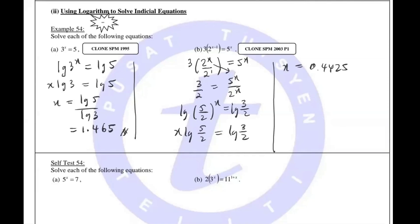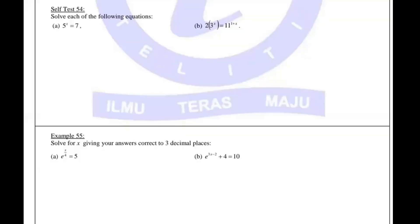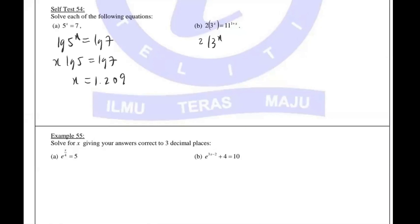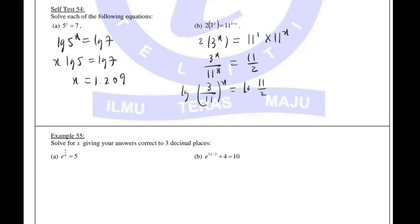For 7^x = 5, just introduce log on both sides and bring the power down: x equals lg7 divided by lg5, giving approximately 1.209. For the next one, don't introduce log first — break up the 11^(x+1) to 11^1 times 11^x, bring the 11 over and the 2 over the other side, factorize x, then introduce log. Use your calculator: log(11/2) divided by log(3/11) gives approximately negative 1.312.